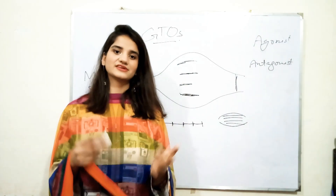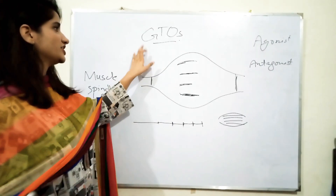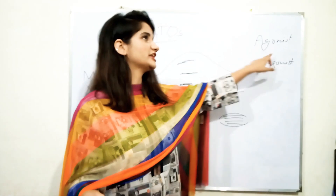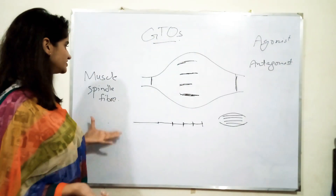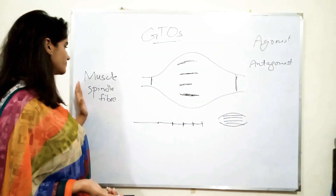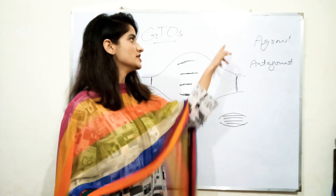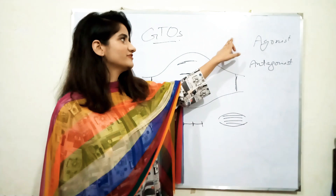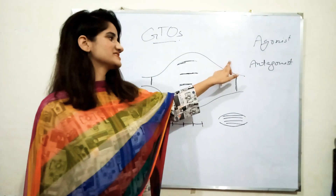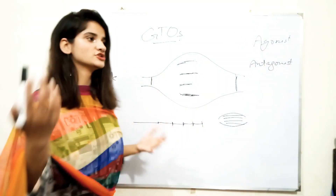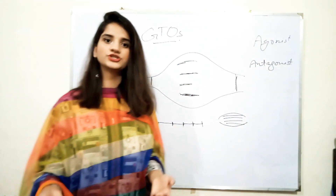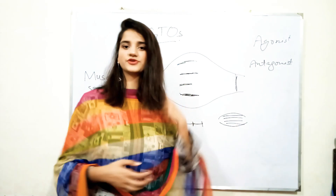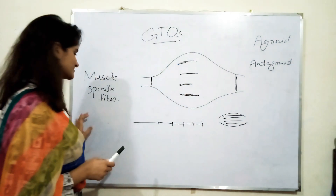In GTOs there is inhibition of muscle tension in the agonist, but the opposite kind of response is produced from muscle spindle fibers. What actually happens is there is initiation of tension development in the agonist, and inhibition of tension development in the antagonist. So opposite to the Golgi Tendon Organ, the sensory receptor would be our muscle spindle fiber.